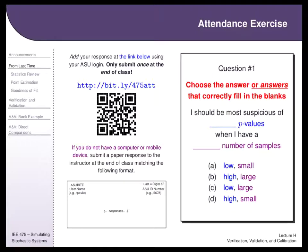As a clarification: when I say 'suspicious,' I mean you can't trust the p-value. I get a p-value and it's low or high, but I can't really trust it. There are going to be a couple more attendance-type questions like this, so you can leave it up and submit them all at once at the end.